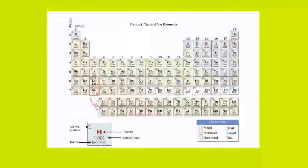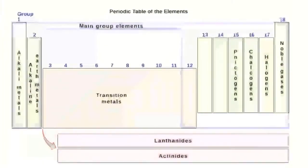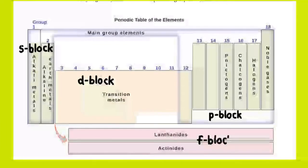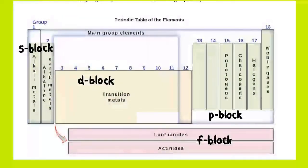In the periodic table of elements, the element with atomic number 1 is hydrogen (H), and 1.008 indicates its atomic mass. Color codes distinguish metals, metalloids, and nonmetals, as well as their phases. The periodic table is also divided into blocks: the s-block contains the alkali metals and alkaline earth metals; the d-block contains the transition metals; the p-block includes the pnictogens, chalcogens, halogens, and noble gases; and the f-block includes the rare earth metals — the lanthanides and actinides.